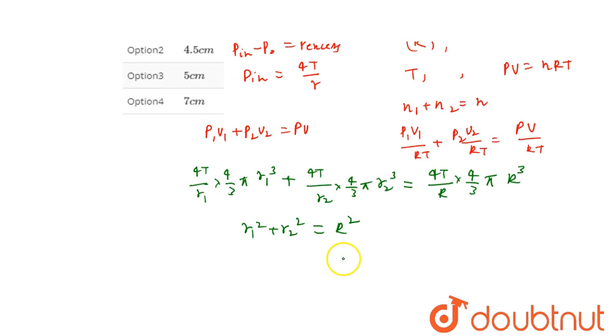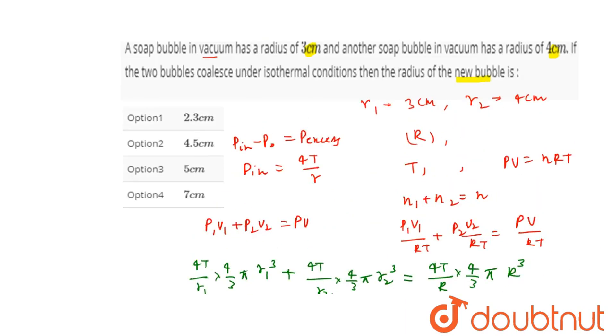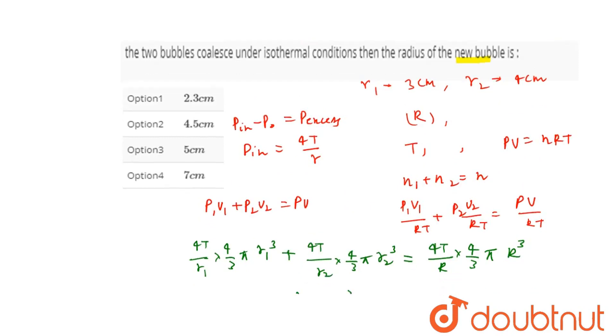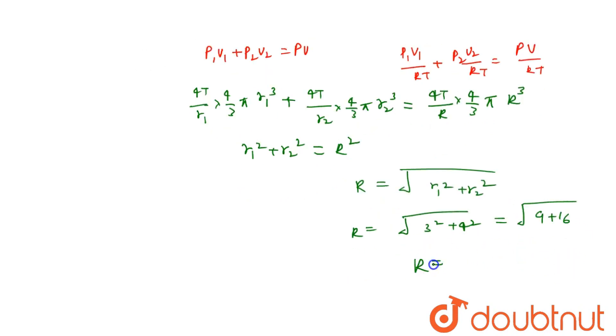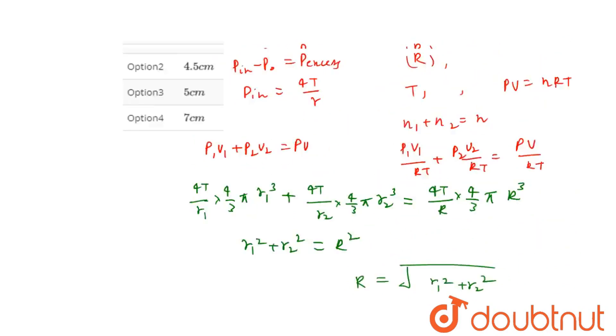So we have to find out capital R. As we have the values of R1 and R2, so R will be equals to square root of R1 square plus R2 square. Put the values. R1 is 3 and R2 is 4, so R will be equals to 3 square plus 4 square, that is 9 plus 16. So here on solving, R value comes as root 25, that is 5 cm. So our final bubble will have a radius of 5 cm.